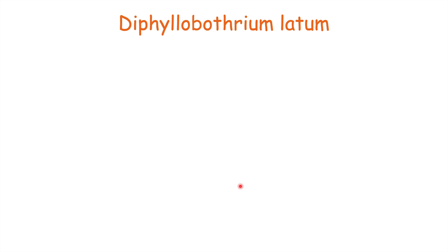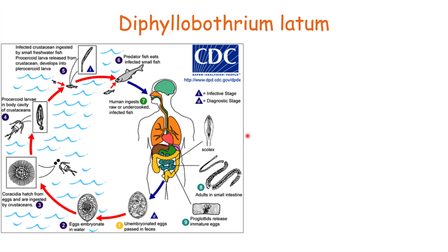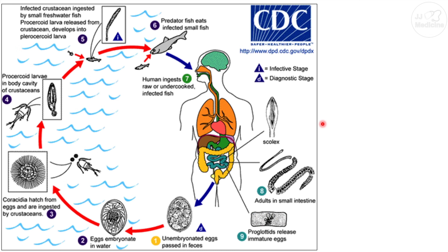The next tapeworm is Diphyllobothrium latum, which has a different mechanism of infection with multiple intermediate hosts. When a patient infected with Diphyllobothrium latum releases unembryonated eggs through feces into the environment, those eggs enter a water source and embryonate. They become coracidia which hatch from the eggs and are then ingested by small crustaceans, inside which they develop into a procercoid larva.